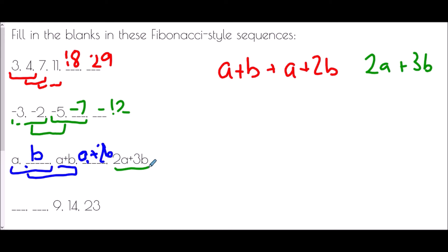Finally, we've got a sequence with blanks: something, something, 9, 14, 23. We've been told it's a Fibonacci-style sequence. Check: 9 plus 14 does make 23, so the rule is working. The blank plus 9 must make 14, so what do you add to 9 to make 14? That's 5. Moving backwards one more space: something plus 5 makes 9, so the first term must have been 4.